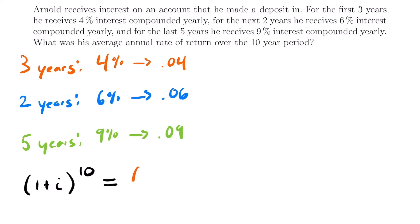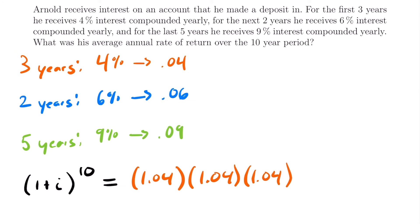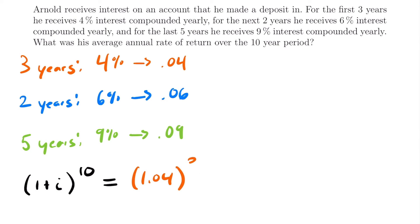We could write each year individually — 1.04 repeated three times, 1.06 repeated twice, and 1.09 repeated five times — but that's lengthy. Instead, we can use an algebra shortcut: raise each quantity to the power of the number of years it applies. So we write 1.04 to the third power for those three years, times 1.06 to the second power for two years, times 1.09 to the fifth power for those last five years.